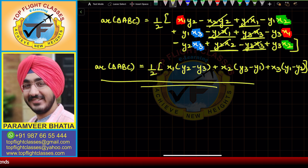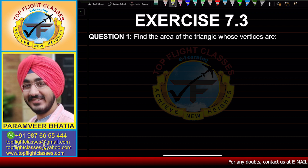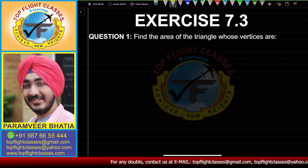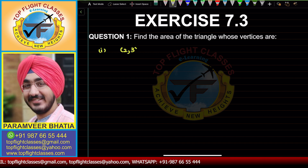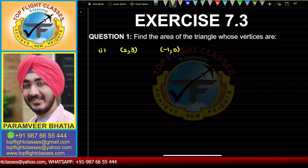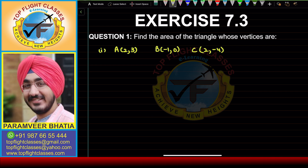This formula is the basis for exercise 7.3 which we will solve now. Question 1 says: find the area of a triangle whose vertices are given. In part one, the vertices are (2, 3), (−1, 0), and (2, −4). Let the first vertex be A, the second be B, and the third be C.